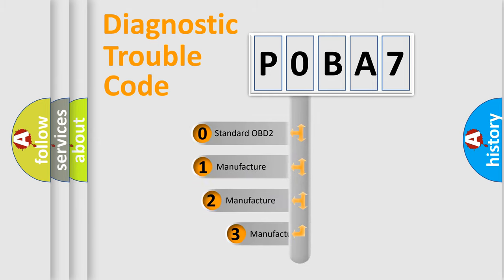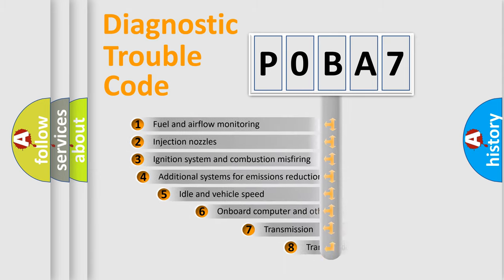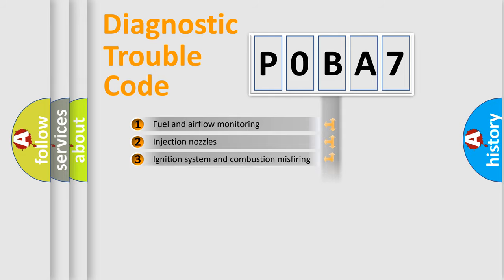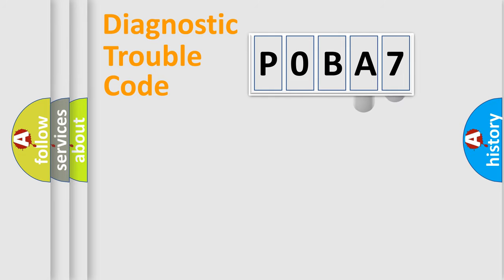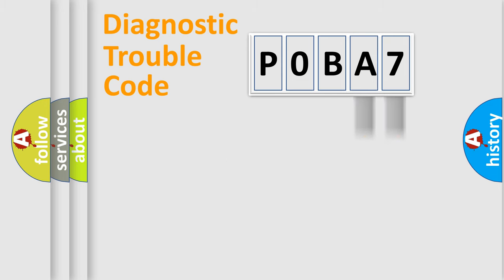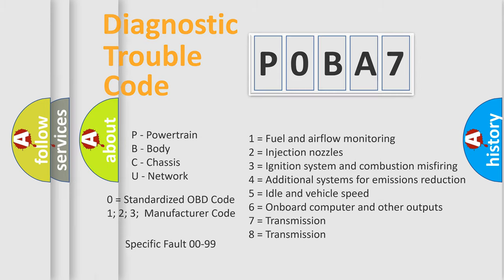If the second character is expressed as zero, it is a standardized error. In the case of numbers 1, 2, or 3, it is a more specific expression of a car-specific error. The third character specifies a subset of errors. This distribution is valid only for the standardized DTC code, and only the last two characters define the specific fault of the group. Such a division is valid only if the second character is expressed by the number zero.